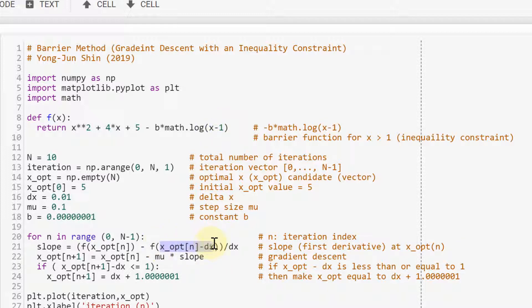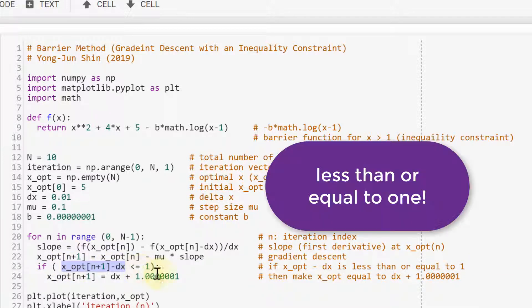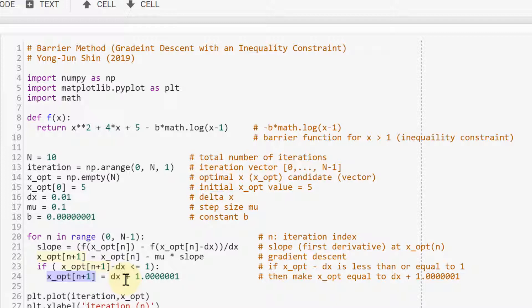That means this must be greater than 1. Otherwise we will have an error because x minus 1 will be less than 0. So this value here, if this is less than or equal to 0, this value is equal to dx plus 1.00001. We're just adding a very small value to 1 and dx.